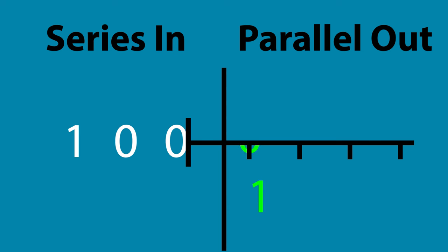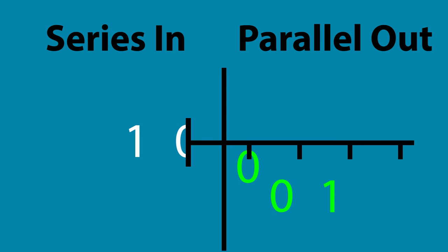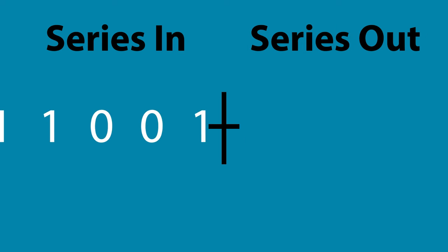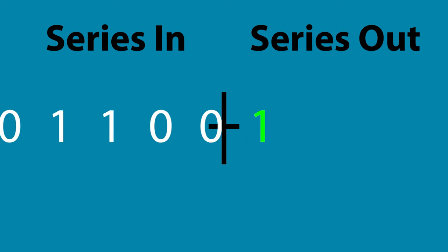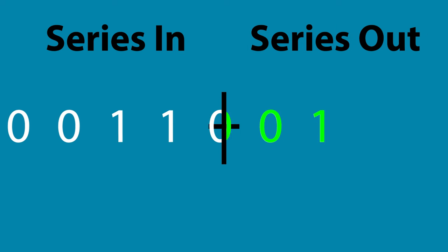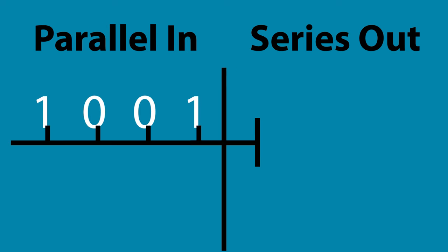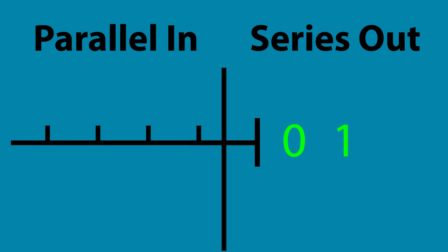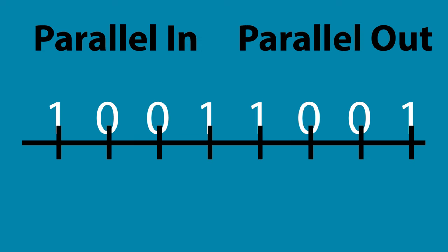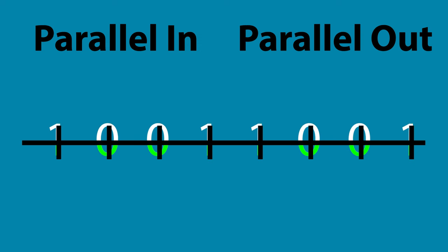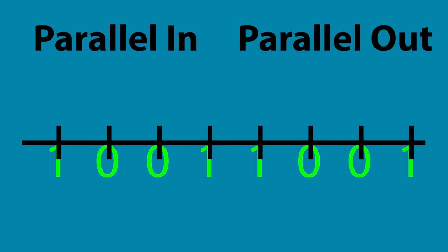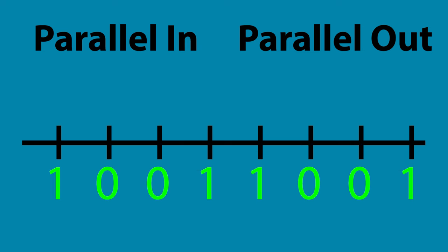In series in, parallel out mode, data comes in one input and shifts across multiple outputs. Series in, series out has the same data coming in from one input going to one output. Parallel in, series out has data coming in from multiple inputs, which shifts to be sent out one output. Parallel in, parallel out has data coming in from multiple inputs going out to, typically, the same number of outputs.